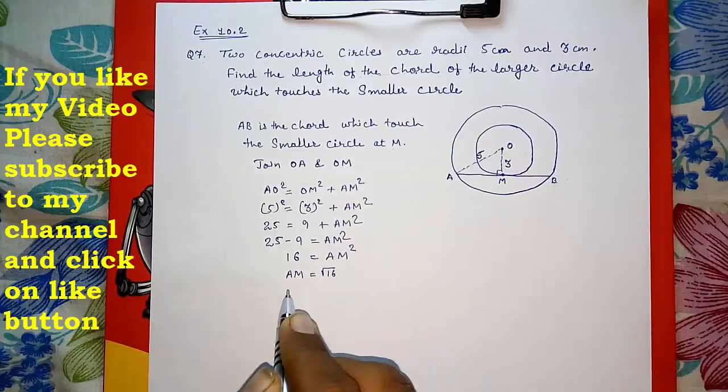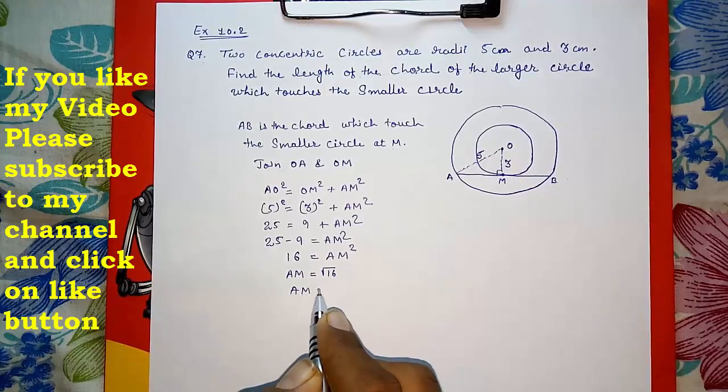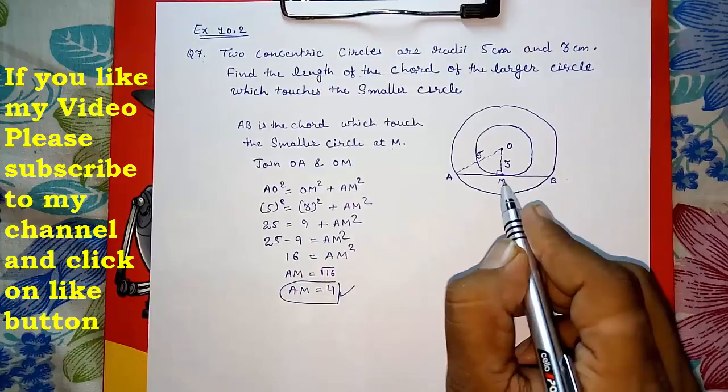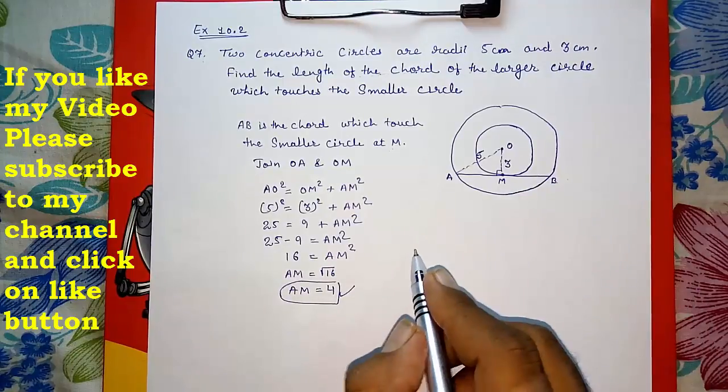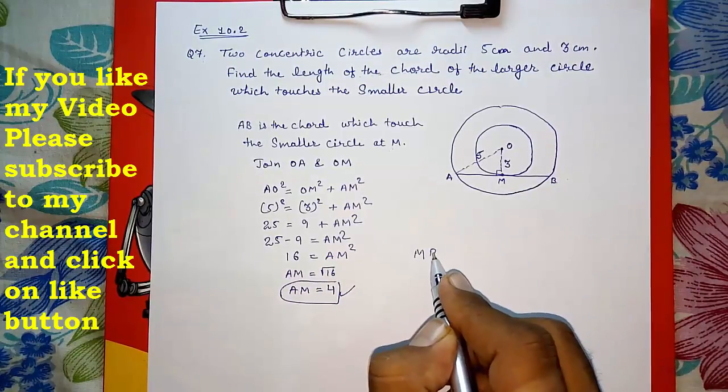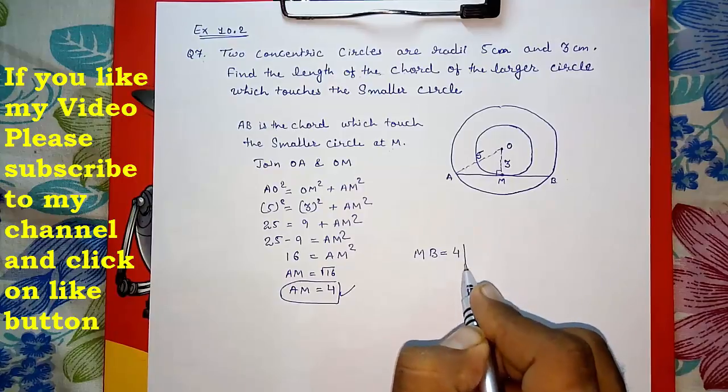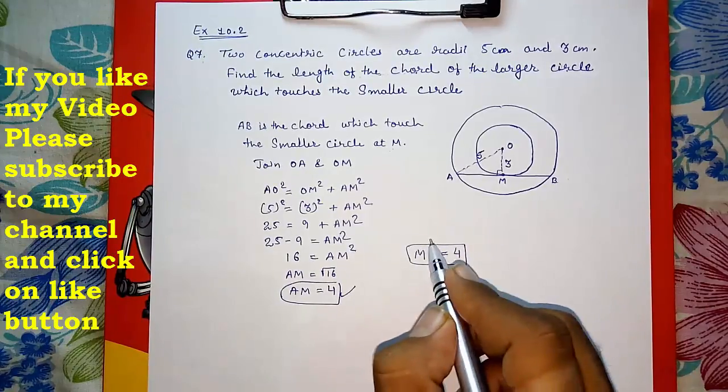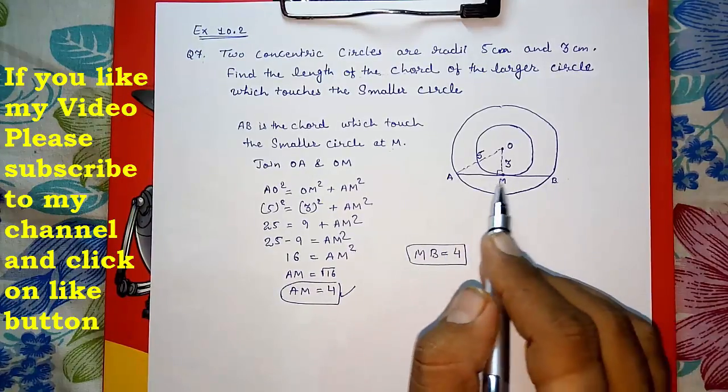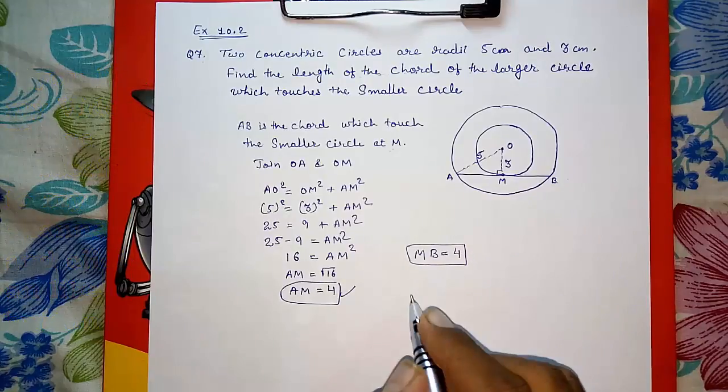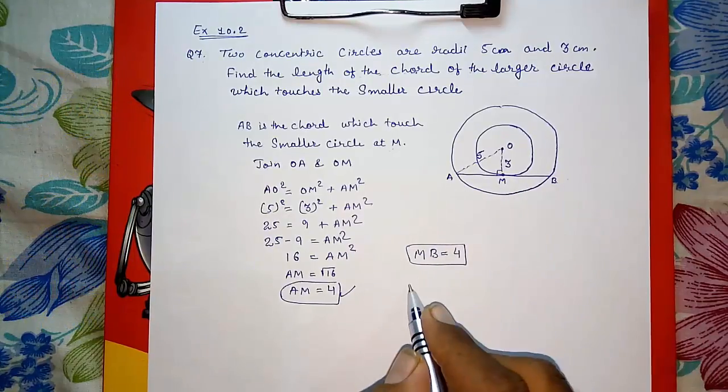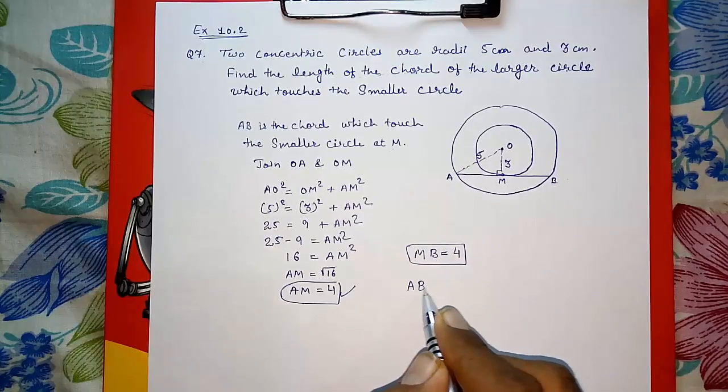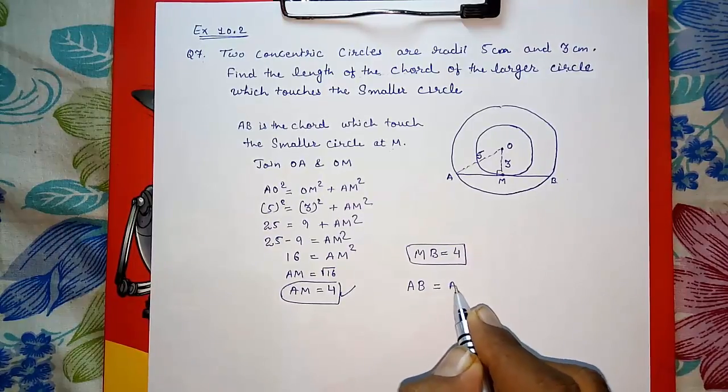Similarly, you can find MB. MB will also equal 4. Similarly, you have to just write a statement that similarly we can find MB, that will also be 4. Now we don't want AM and MB, we actually want AB.